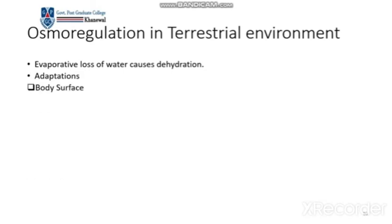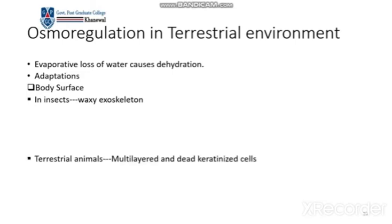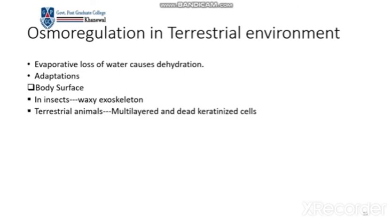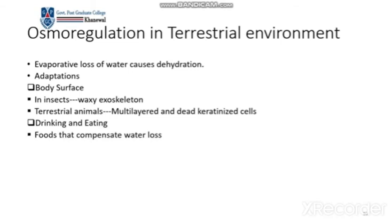Adaptations to prevent dehydration include: a waxy exoskeleton in insects that reduces water loss; multi-layered dead keratinized cells in the body surface, which also cause less dehydration; and drinking and eating foods that compensate for water loss.